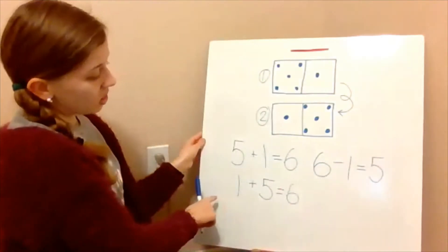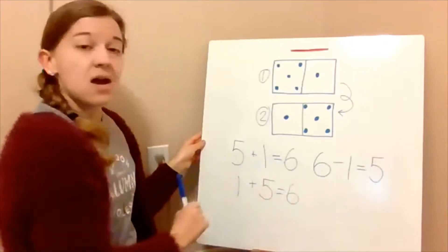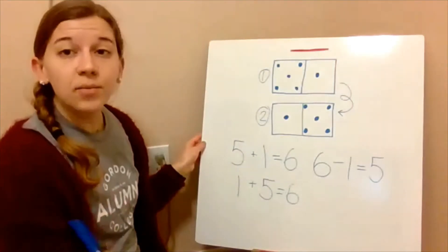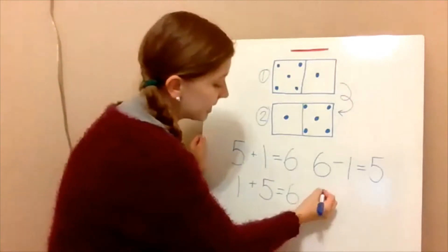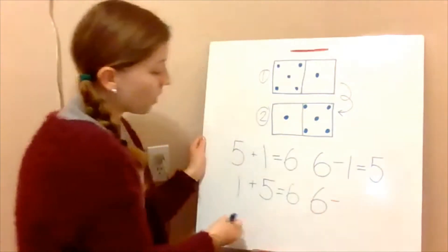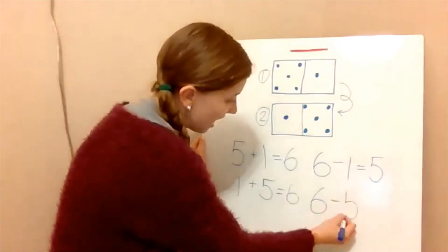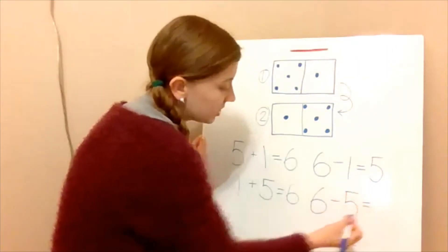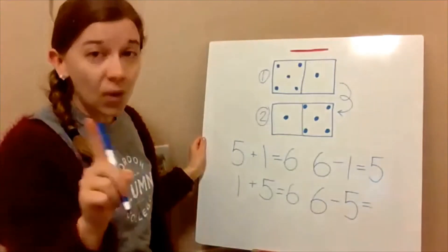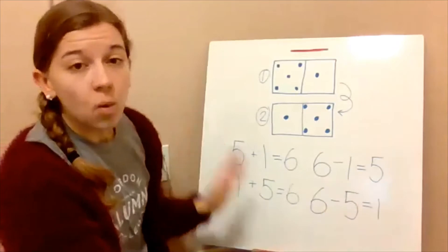And then for the subtraction fact related to one plus five equals six, what number would we start with? The largest number — that would be six. Six minus five: if you have six and you take away five, you end up with one. Six minus five equals one.